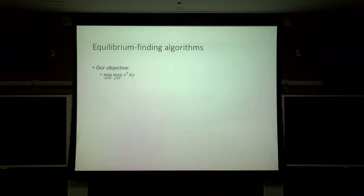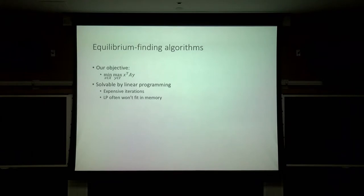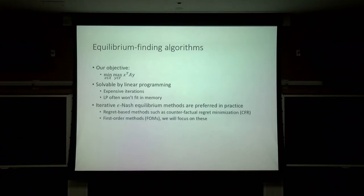How do we solve these? One option is linear programming, which is a well-known technique. But the problem is that iterations of the simplex algorithm or interior point methods are too expensive because we'd have to invert matrices that are far too large, and they often won't fit in memory. So instead, in practice, what's preferred is to use iterative epsilon Nash equilibrium algorithms, such as the counterfactual regret minimization algorithm or first-order methods. We'll focus on first-order methods, though CFR is currently the practical state-of-the-art.